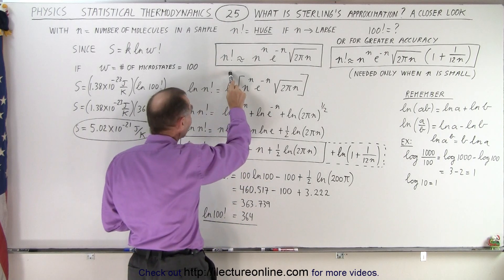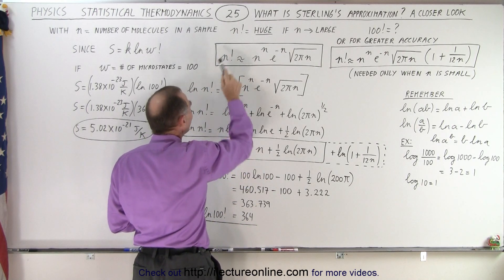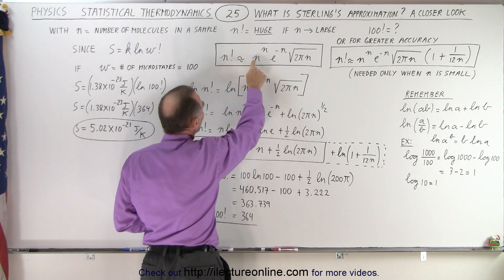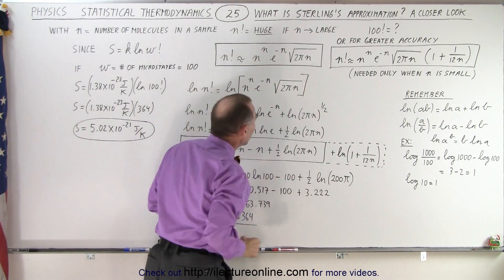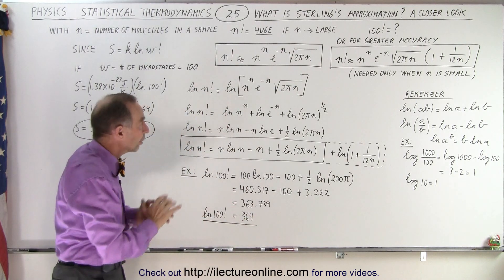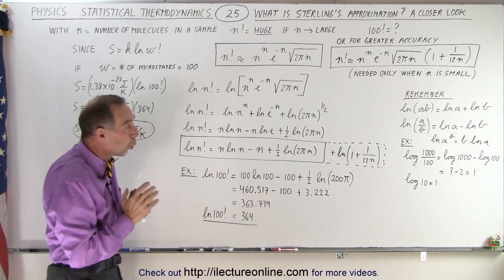So here we have an approximation for n factorial. Notice that it's approximately equal to n to the n power times e to the minus n power times the square root of 2 pi n.